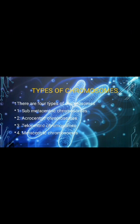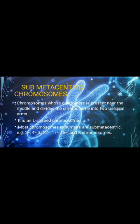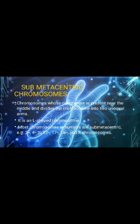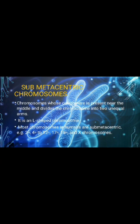Next, the types of chromosomes. There are four types of chromosomes: sub-metacentric, acrocentric, telocentric, and metacentric. First, the sub-metacentric chromosome. This is the chromosome whose centromere is present near the middle and divides the chromosome into two unequal arms. It is L-shaped. Most chromosomes in humans are sub-metacentric.